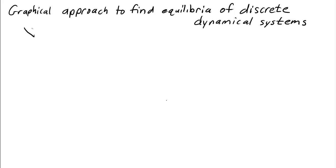If I have a dynamical system, x_{n+1} = f(x_n), what do I do to find an equilibrium?